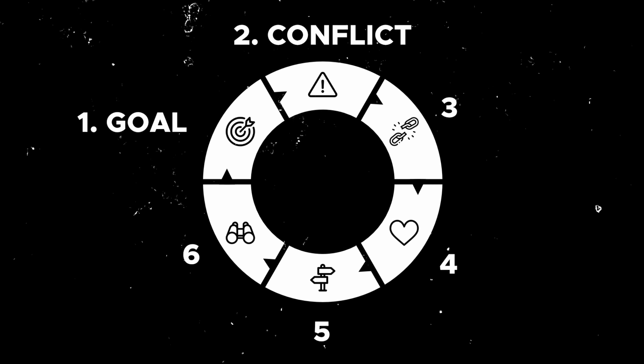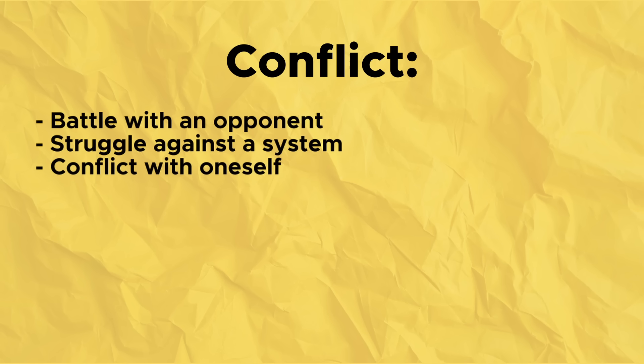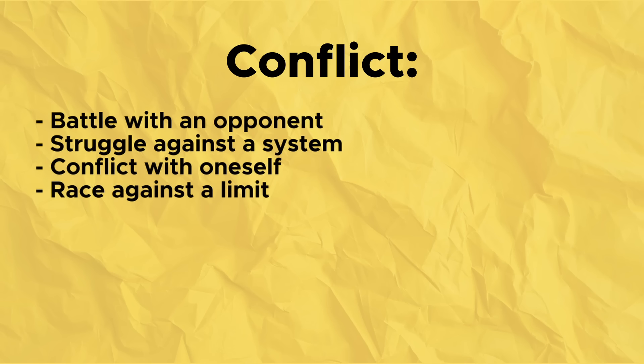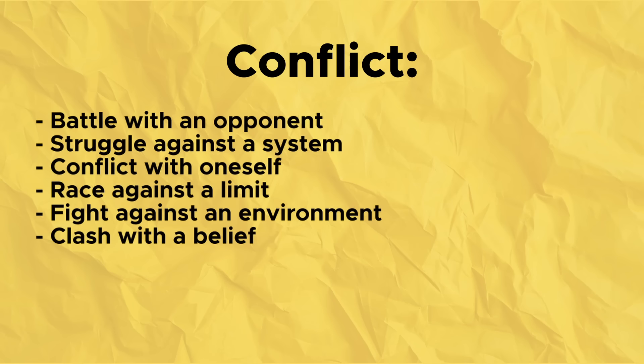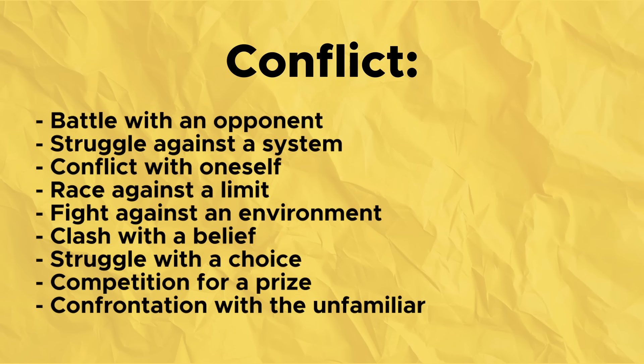Step two of scene structure is conflict — what is stopping your character from getting what they want? Perhaps it's a battle with an opponent, a struggle against a system, some kind of inner conflict, or racing against a limitation or barrier. Perhaps the character is fighting against an environment — maybe their fishing village is about to be swept away by a tsunami and they have to use magic to stop it. Your character could also be clashing with a belief, competing for a prize, or facing an unfamiliar and strange force.